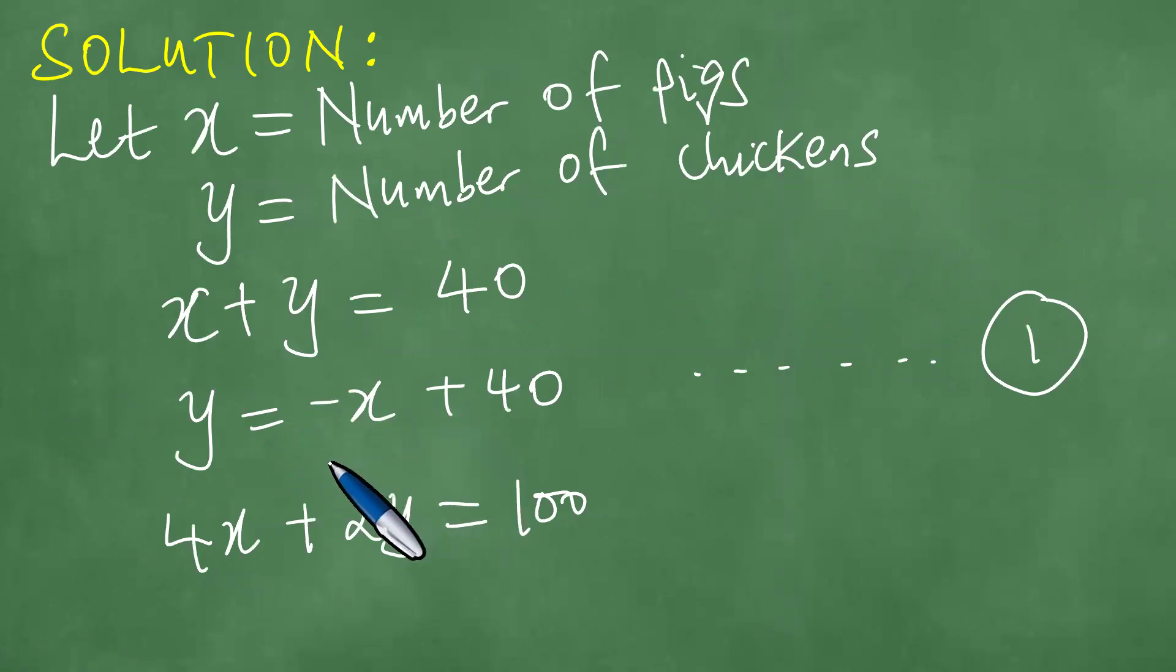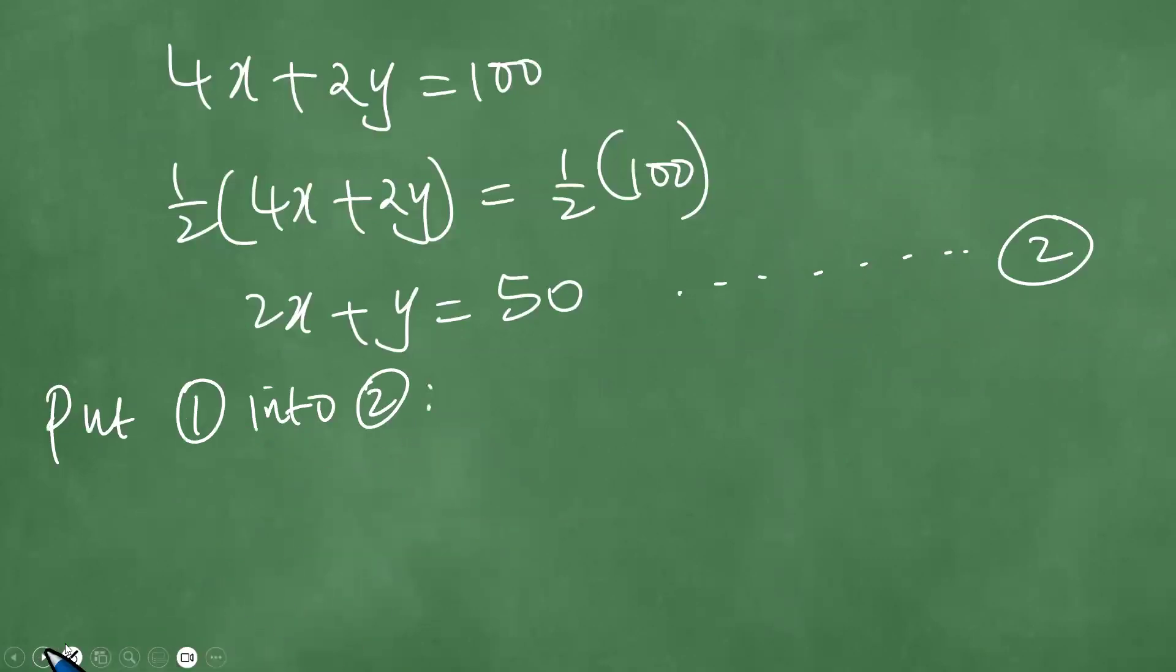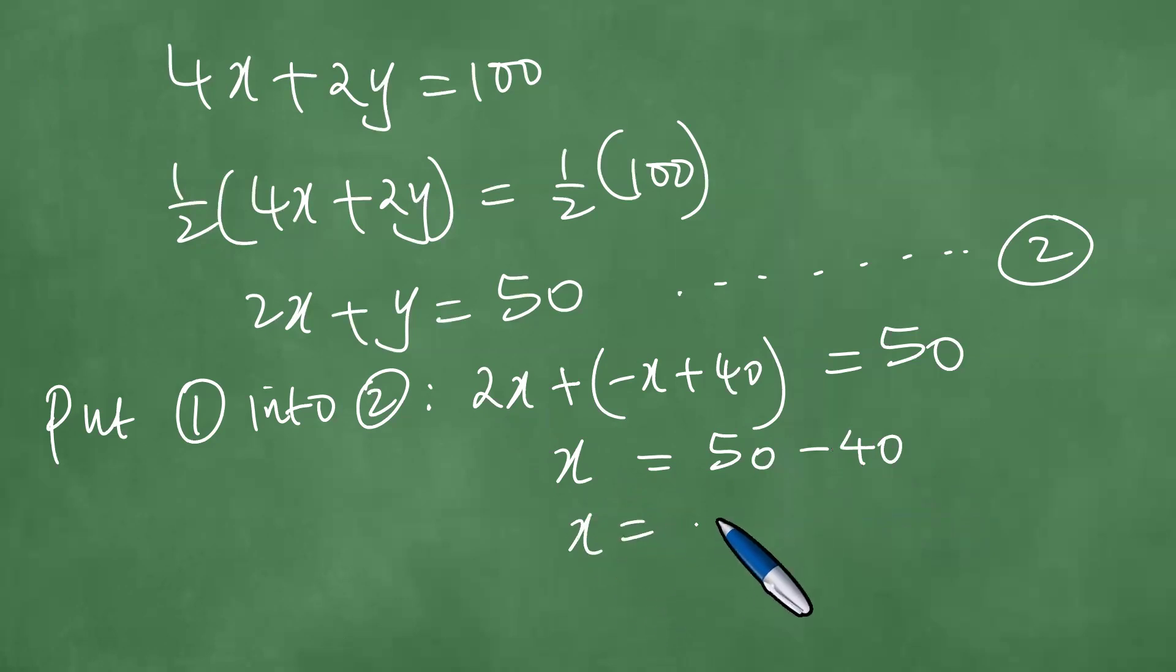And equation one is Y equals minus X plus 40. So we have 2X plus Y equals minus X plus 40, which is equal to 50. And we have 2X minus X which is exactly X. And X now is equal to 50 minus 40, which is actually 10.